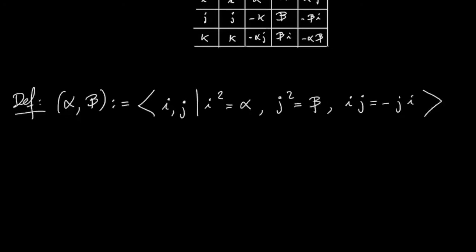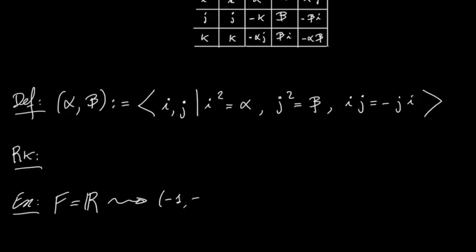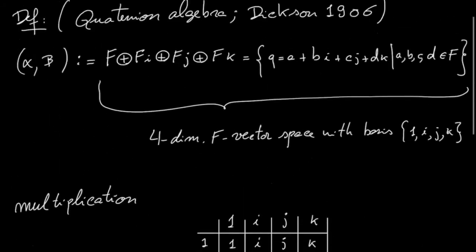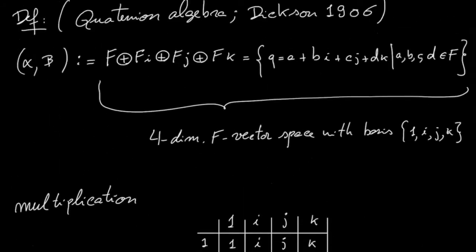Using this definition one sees immediately — and this is the first remark — that in the particular case where the base field is the reals, when we take alpha equals minus one and beta equals minus one, what we get is actually Hamilton's quaternion algebra. So quaternion algebras generalize Hamilton's construction.